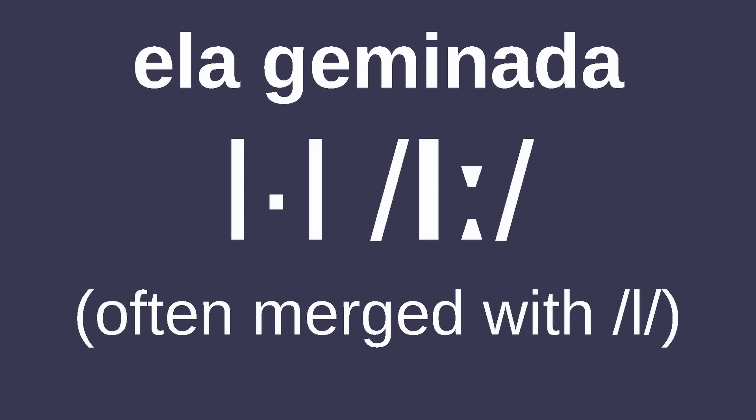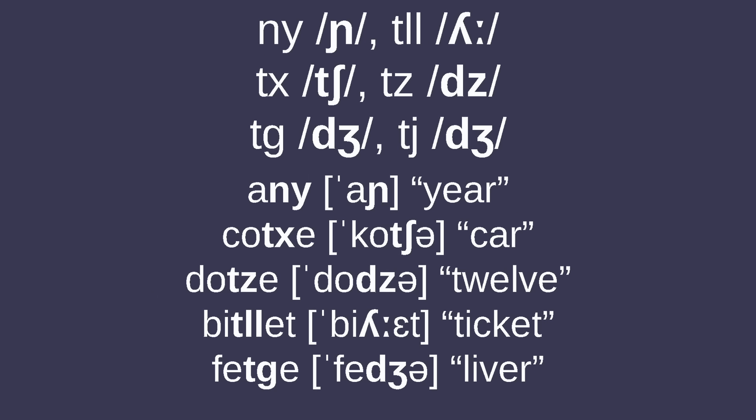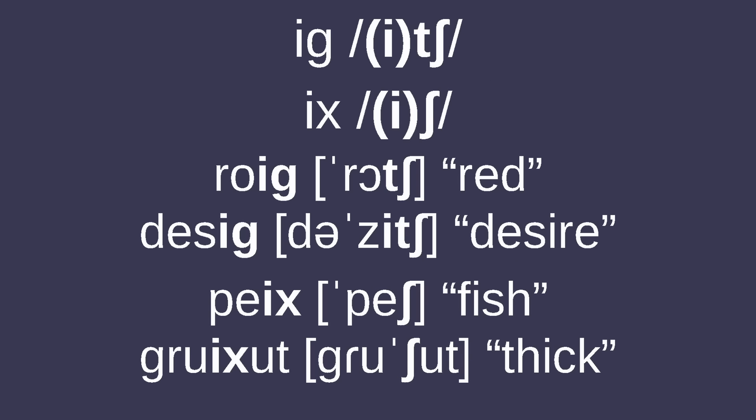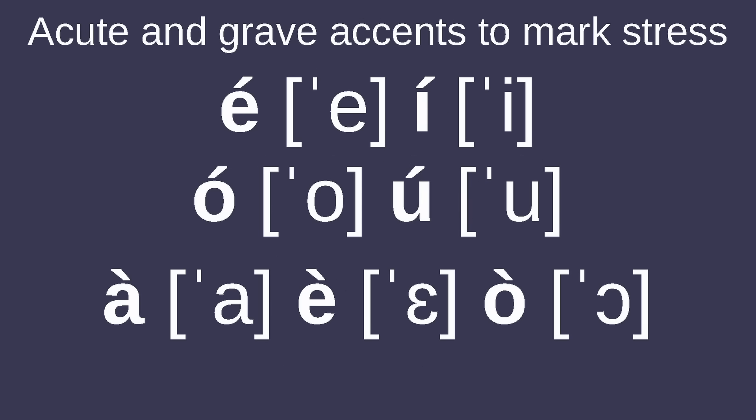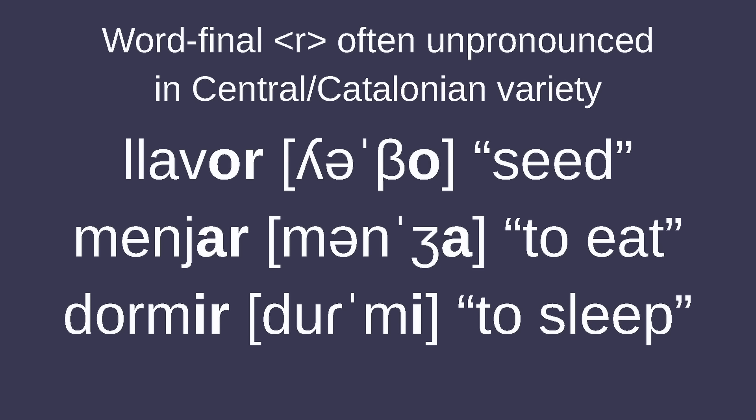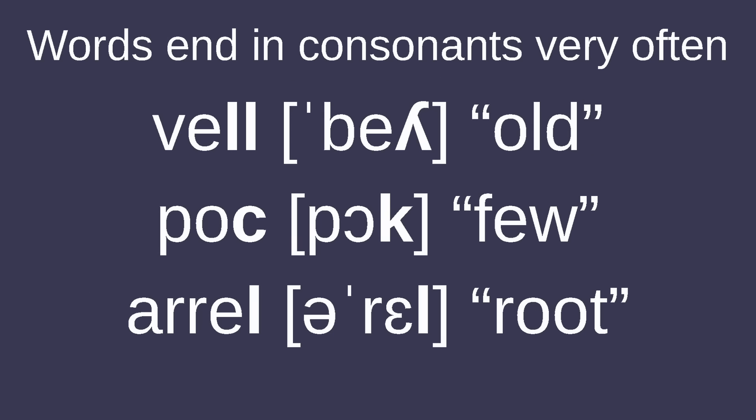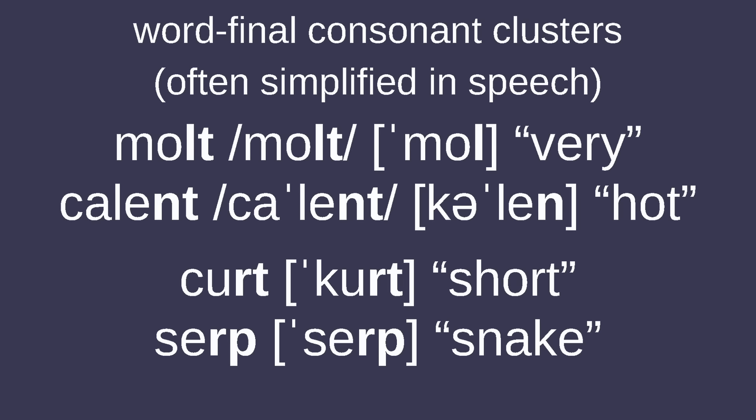There's also el·l geminada, a long L sound, written as L with middle dots, though this is often merged with plain L. Catalan uses the digraph NY to represent /ɲ/, TX for /tʃ/, TZ for /dz/, TL·L for /ʎː/, and both TG and TJ for /dʒ/. Digraphs IG and IX represent /tʃ/ and /ʃ/ respectively after vowels. Catalan uses acute accents to mark stress, except for A, E, and O, which are marked with grave accents.